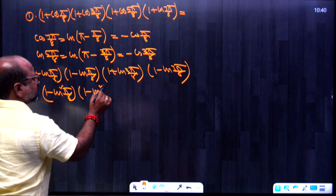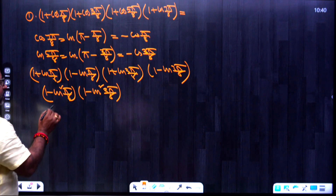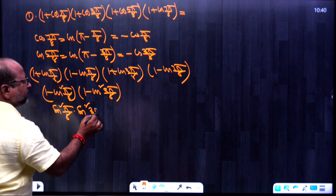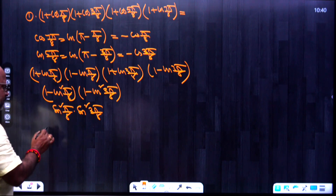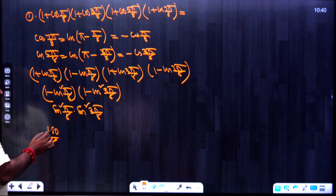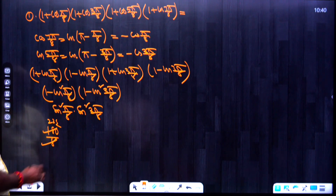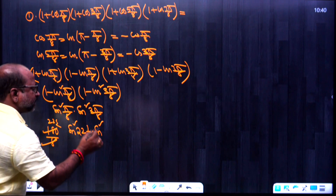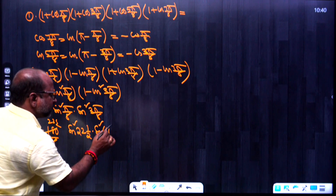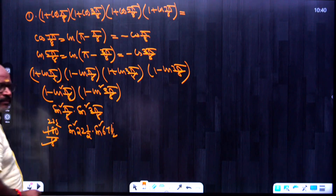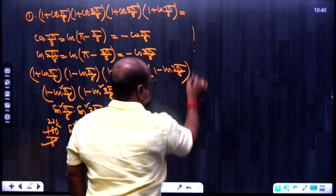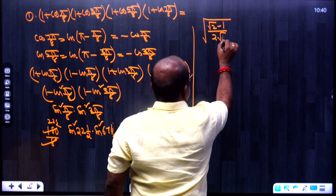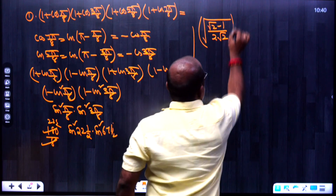Using 1 - cos²θ = sin²θ, the product becomes sin²(π/8) × sin²(3π/8). Since π/8 = 180°/8 = 22.5°, this equals sin²(22.5°) × sin²(67.5°). The value of sin(22.5°) involves √2, giving (√2 - 1)/(2√2).